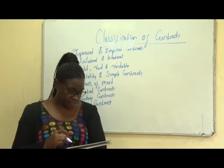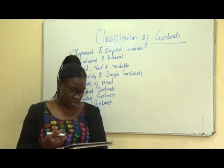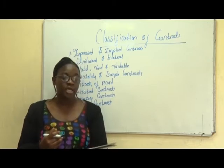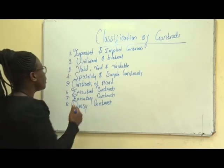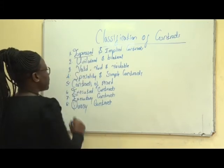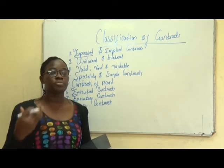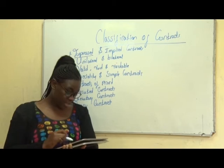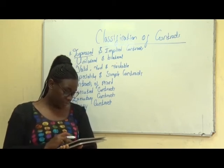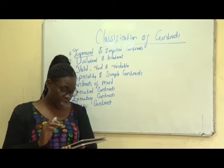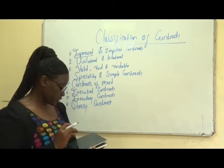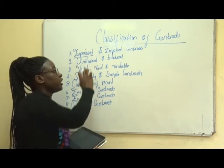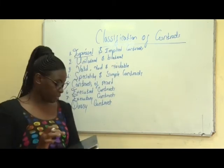An expressed contract is one in which parties specifically agree about the nature of the terms and relationship. So it's expressed — meaning people have to express themselves, get to talk and agree with one another. On the other hand, there is no specific agreement in an implied contract. In an implied contract, there is no formal expressed agreement.